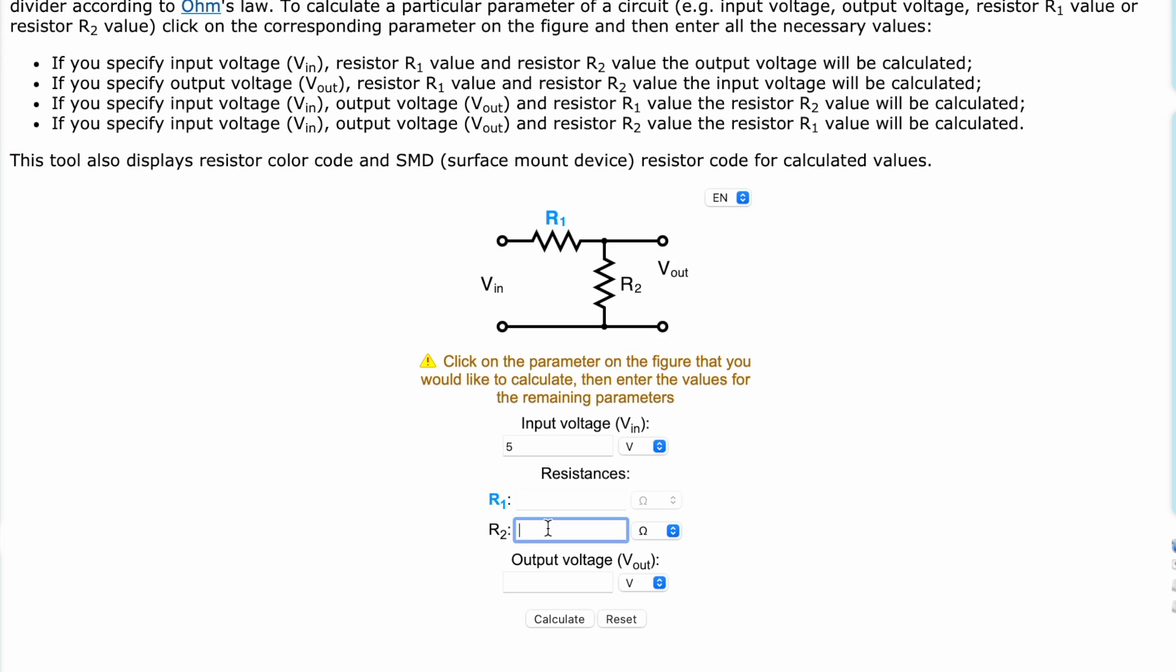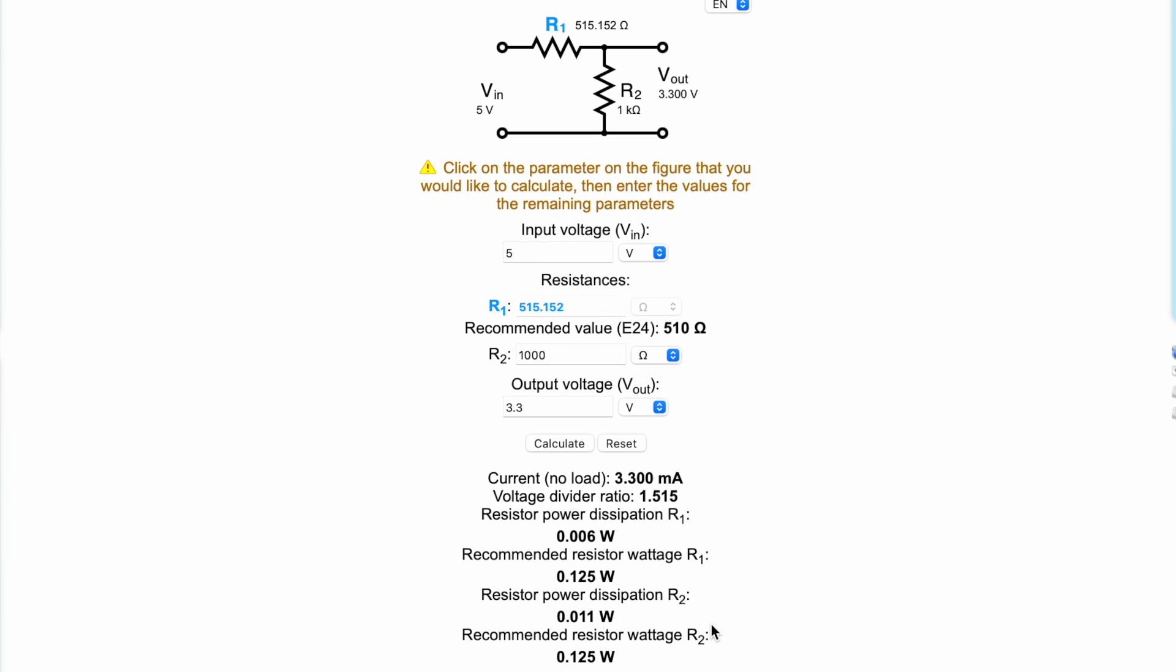We know the input resistance desired for the microprocessor input is 1 kilohm, and therefore we select R1 for calculation. The selected element is highlighted in blue. You indicate 5V, R2 enter 1000 ohms, Vout indicate 3.3V and click calculation.